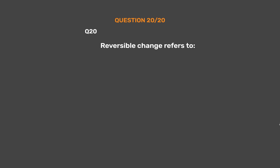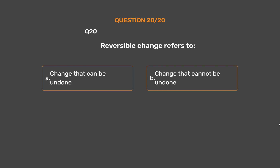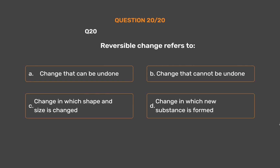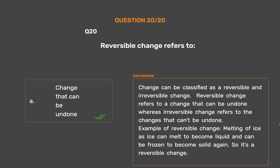Question number 20: Reversible change refers to — Option A: Change that can be undone. Option B: Change that cannot be undone. Option C: Change in which shape and size is changed. Option D: Change in which a new substance is formed. The correct answer is Option A, change that can be undone. Change can be classified as reversible and irreversible. Reversible change refers to a change that can be undone whereas irreversible change refers to changes that can't be undone. Example of reversible change: melting of ice, as ice can melt to become liquid and can be frozen to become solid again.